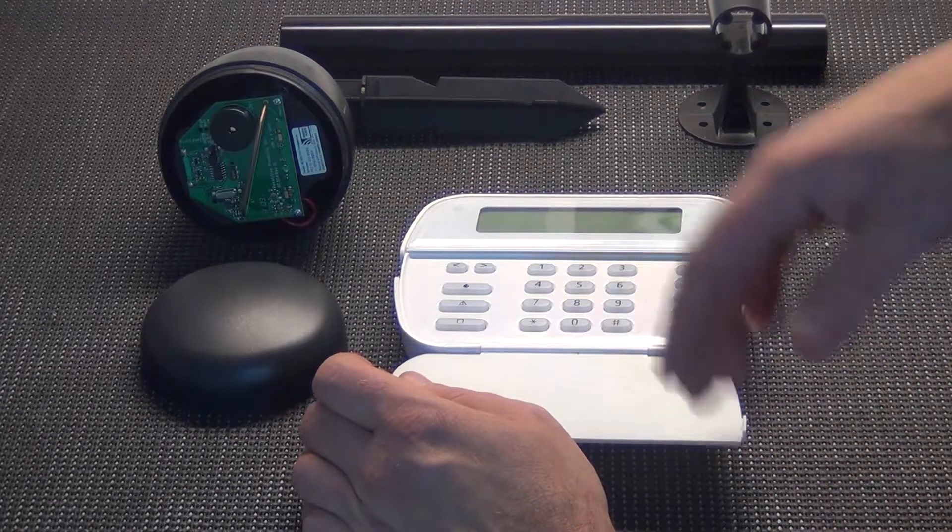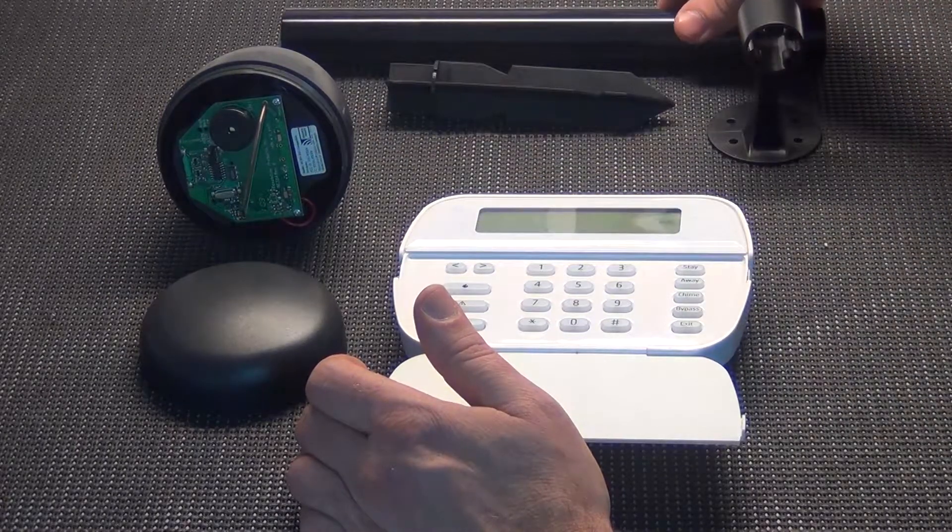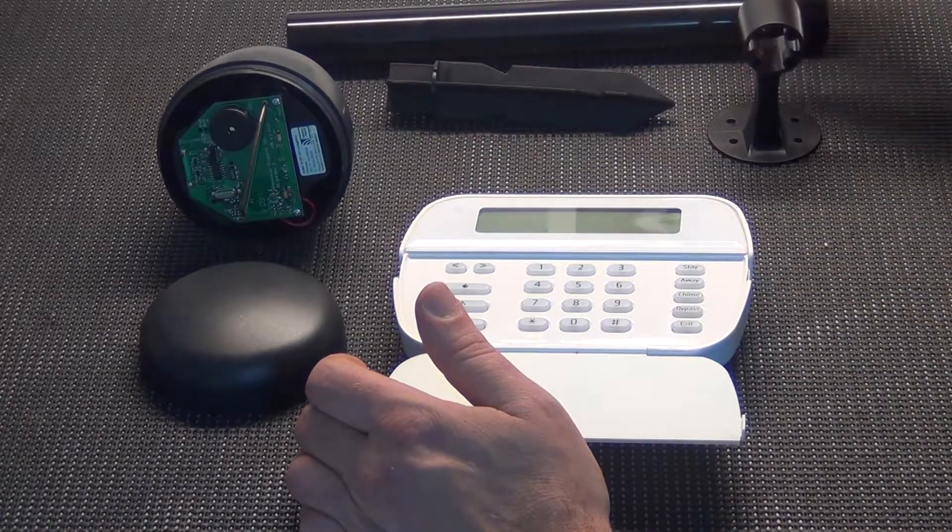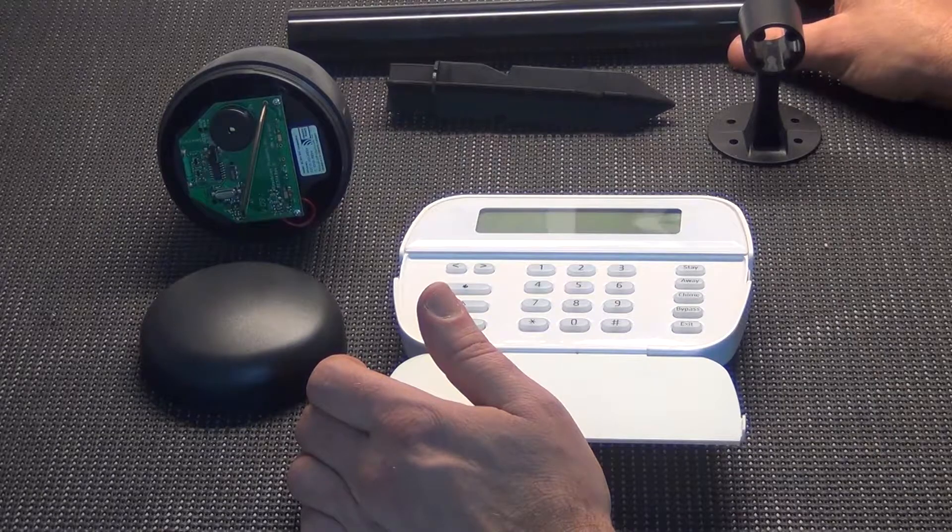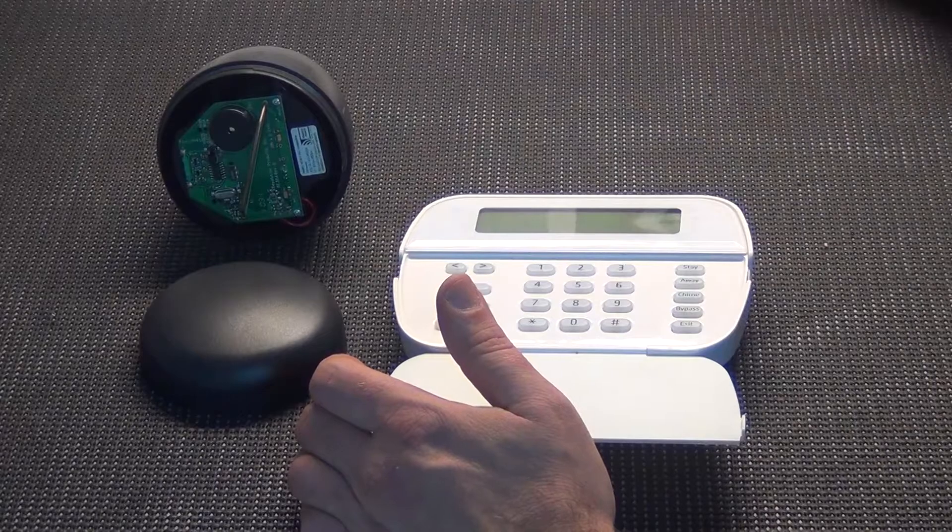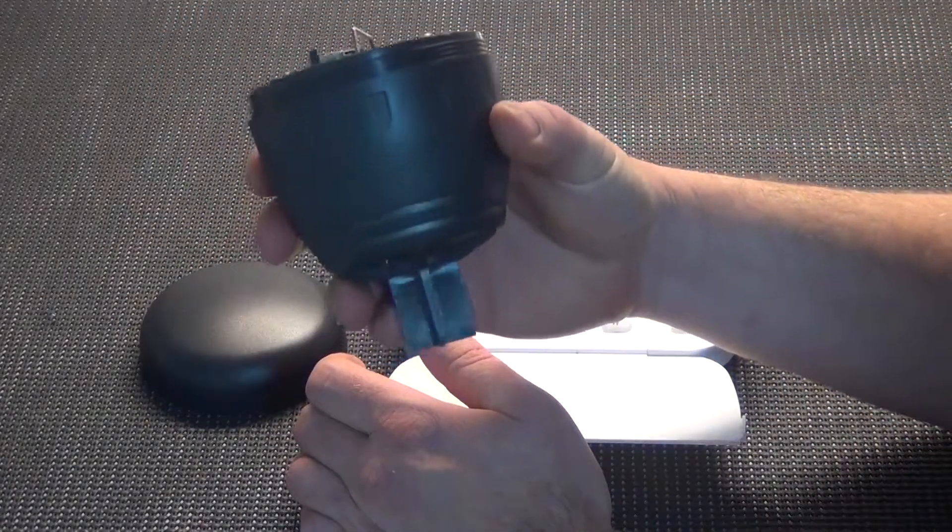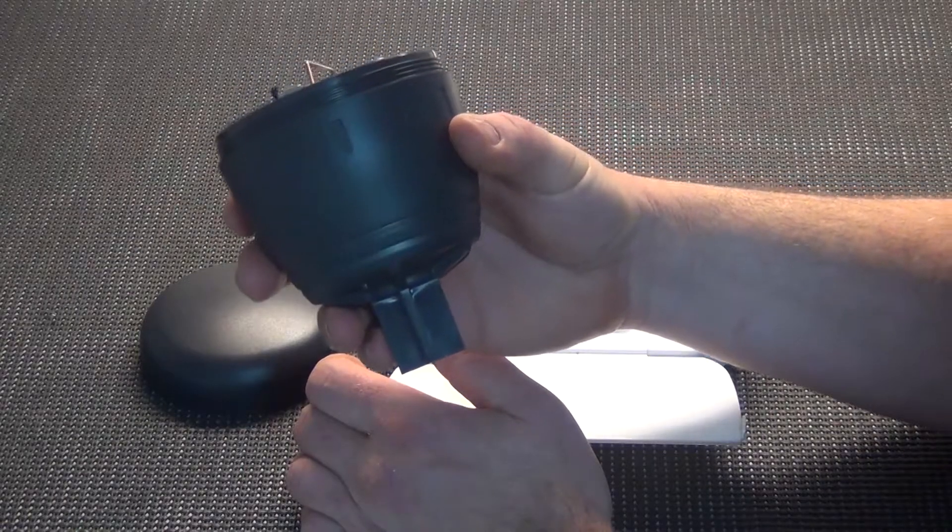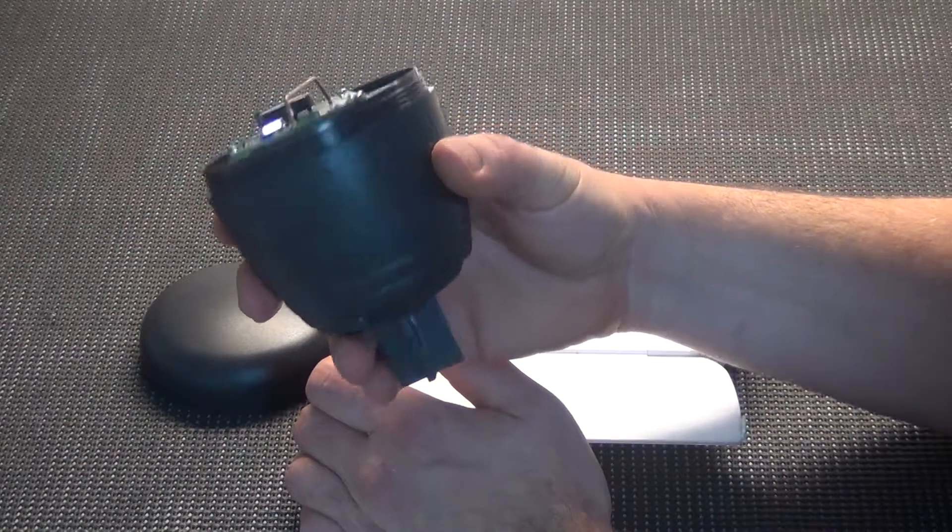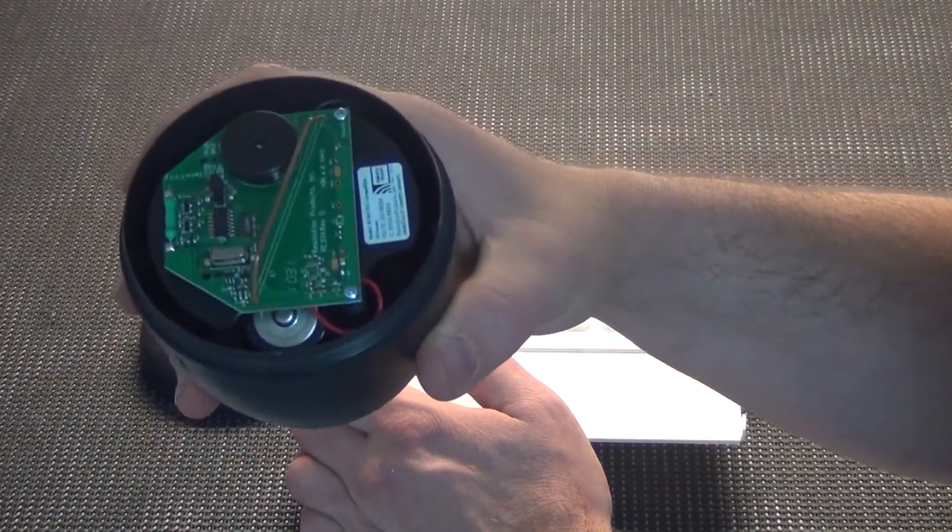So what you see here, these pieces back here are basically the stand that it sits on. They have nothing to do really with what we're going to do here, I just wanted to show them to you. So we're going to put those off to the side. This is your main unit, the head of the driveway detector. As you can see it's got a nice little circuit board in there and space for the batteries.